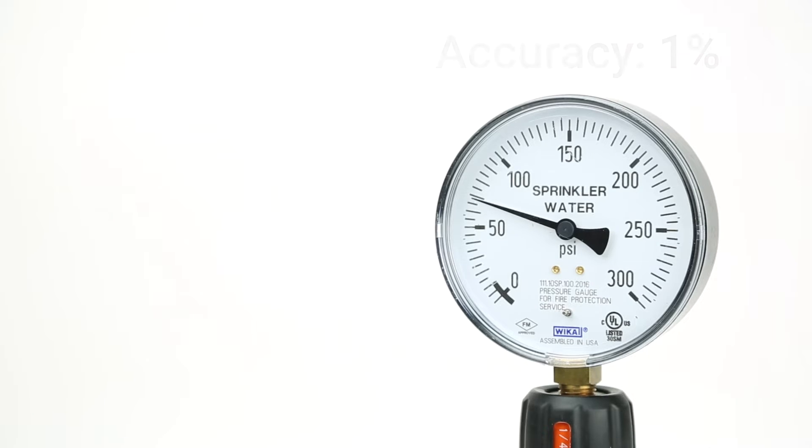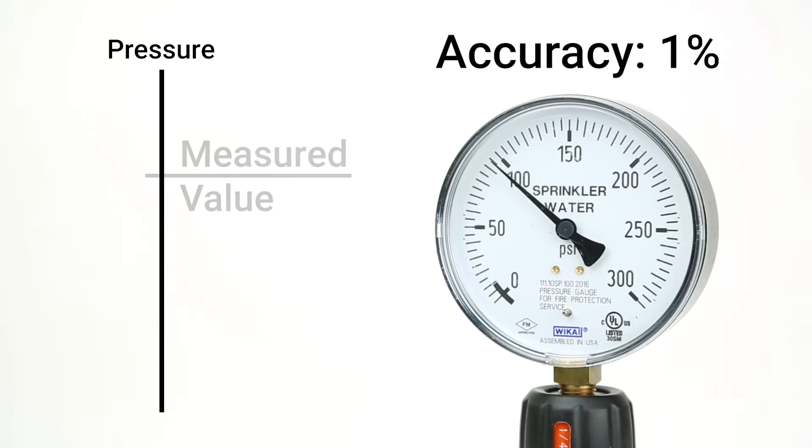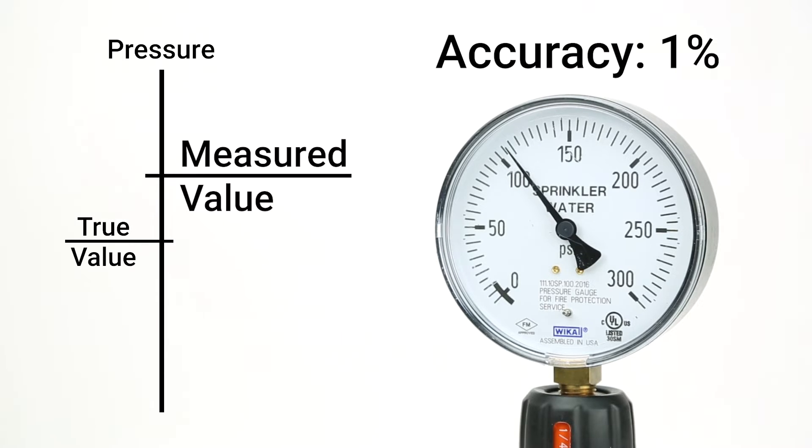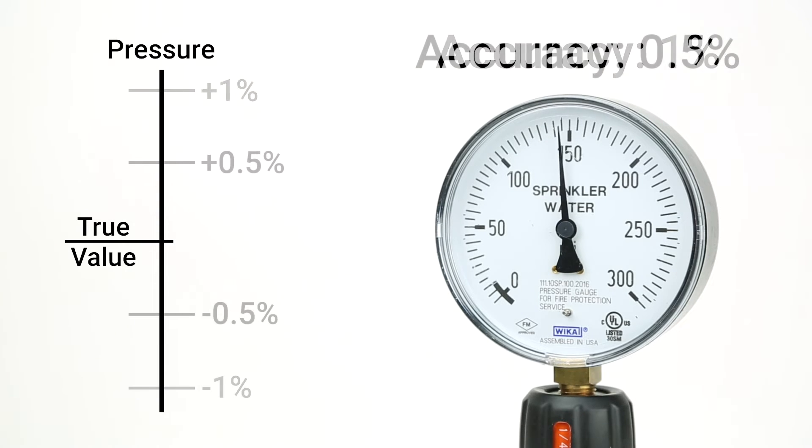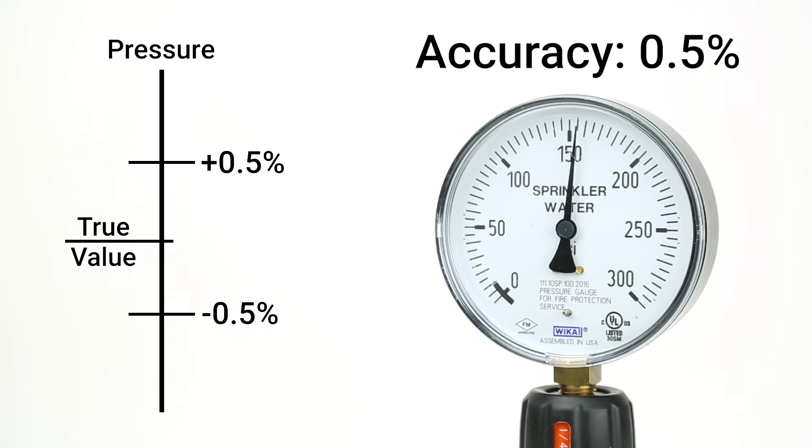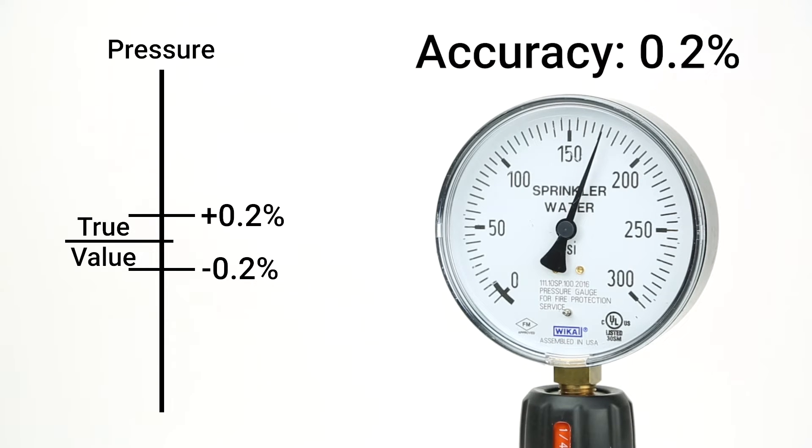When a device's accuracy is stated within its specifications, it represents the maximum difference between the measured value and the true value. A device with an accuracy of 1% is guaranteed to give a reading within 1% of the true value. This means that lower accuracy values are actually more accurate because they have a smaller range around the true value.